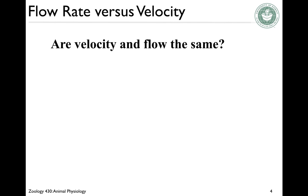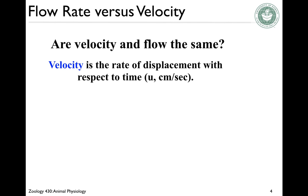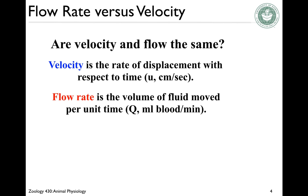One thing you should appreciate is the difference between velocity and flow rate. Velocity is how fast a particle is moving — the rate of displacement with respect to time; it's like the speed of the flow. Flow rate, though, is a volumetric measure: the volume of fluid moved per unit time. Flow rate is velocity times cross-sectional area, so they just can't be the same.